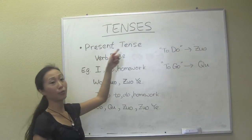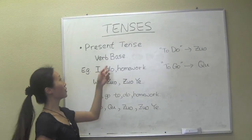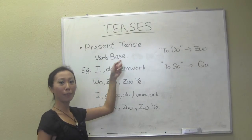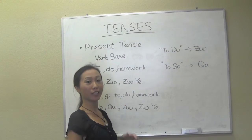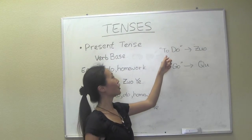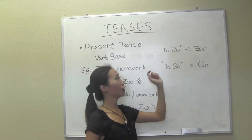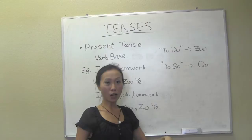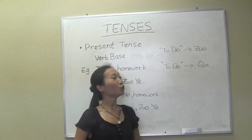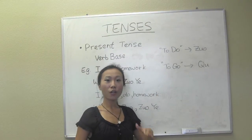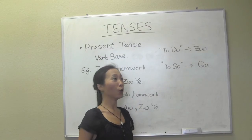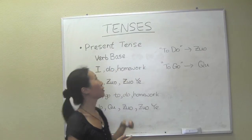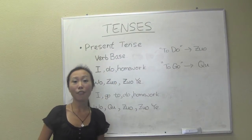The basic structure is the present tense. In the tenses, we use what we call a verb base. Let's see some examples of what this verb base is. For example, 'to do' in English — in Chinese it's 做, which means 'to do.' Another example: 'to go' is 去, which means 'to go.' These two verb base structures are mainly used in the present tense format.